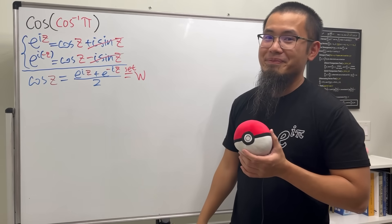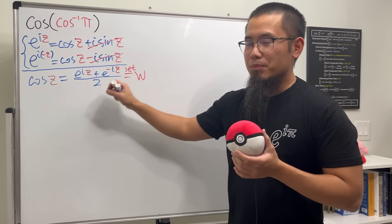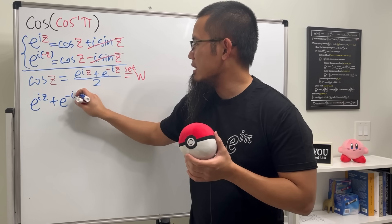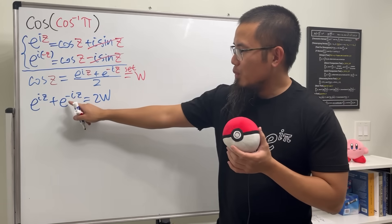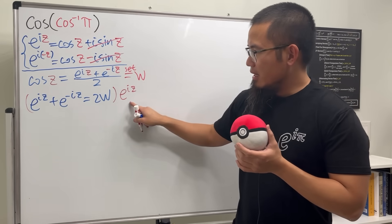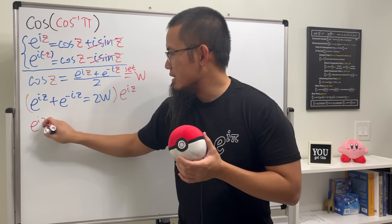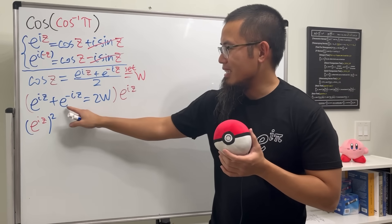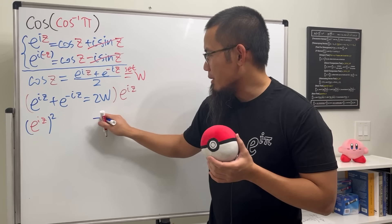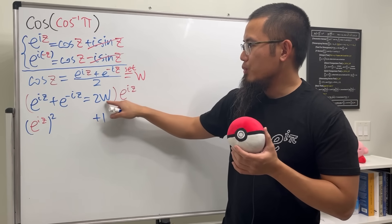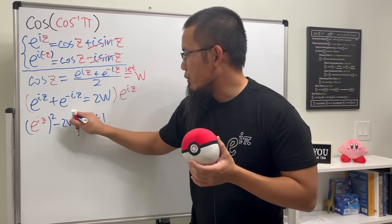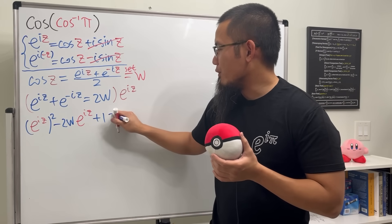From here let's multiply both sides by two and we get e to the iz plus e to the negative iz equal to 2w. We have e to the negative iz, so let's multiply everybody by e to the iz. That term becomes e to the iz squared, and e to the negative iz times e to the iz is just e to the zero which equals one. The right side becomes 2w times e to the iz. Moving that to the left we get e to the iz squared minus 2w times e to the iz plus one equals zero.